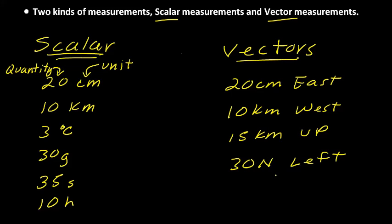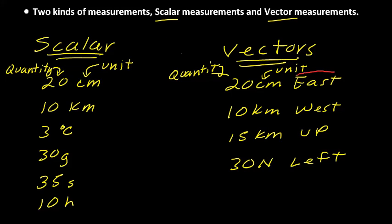You can probably guess right now what the difference is between a scalar measurement and a vector measurement. What does a vector measurement have that a scalar measurement doesn't? Vector measurements have not only a quantity and a unit of measurement, but they also include a direction. All vector measurements have that — a quantity, a unit of measurement, and a direction. 10 kilometers west has a quantity, a unit of measurement, and a direction.